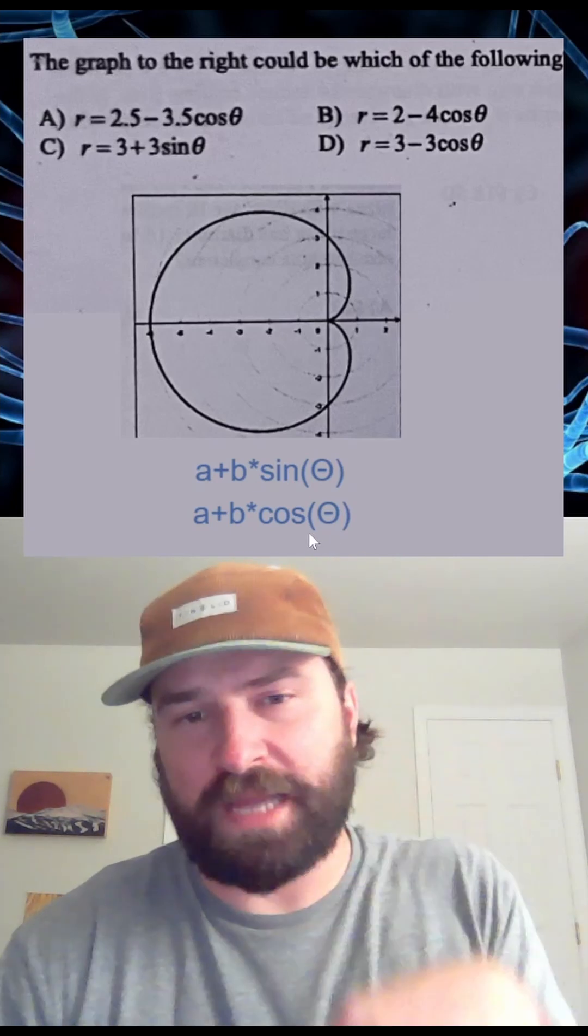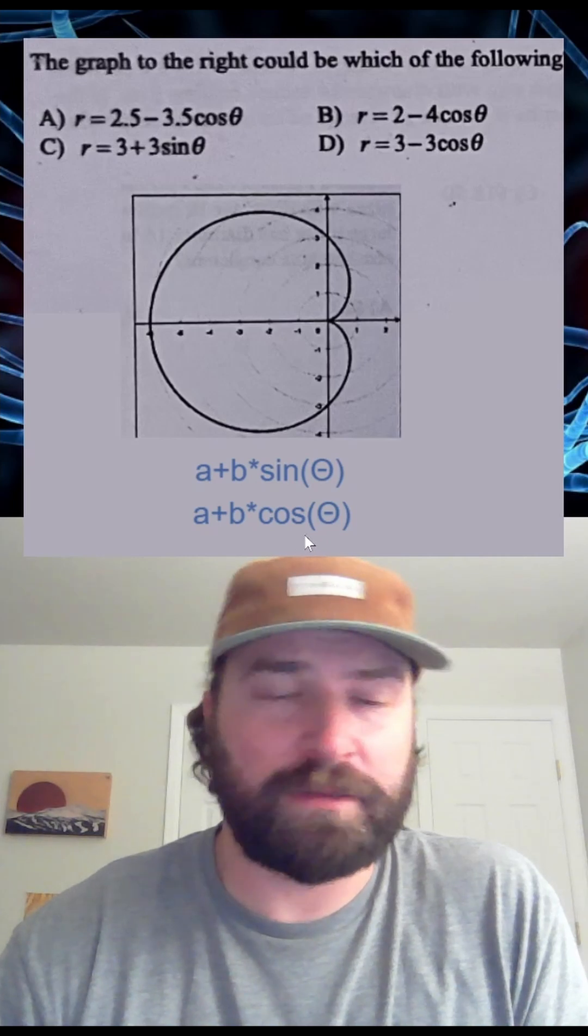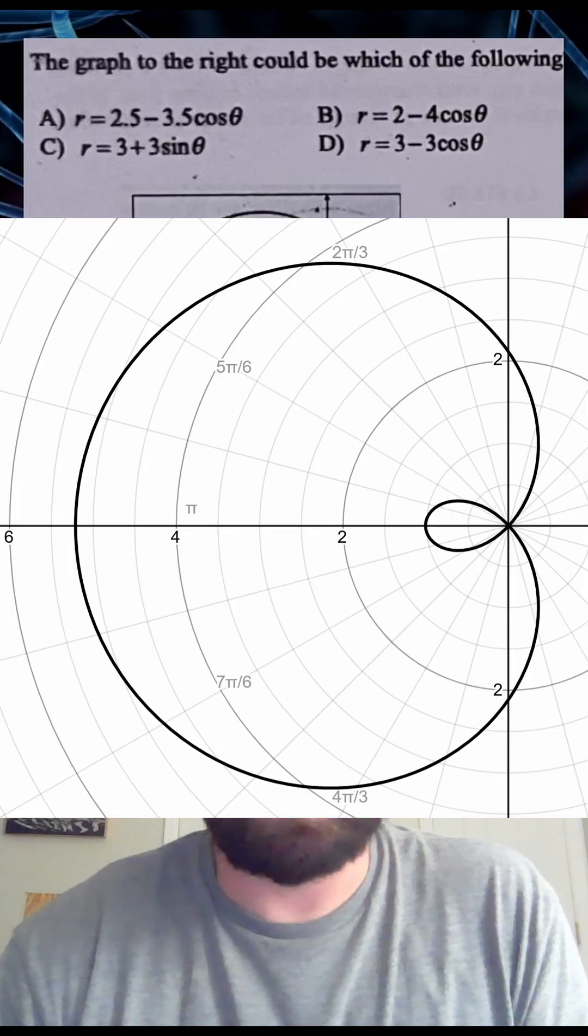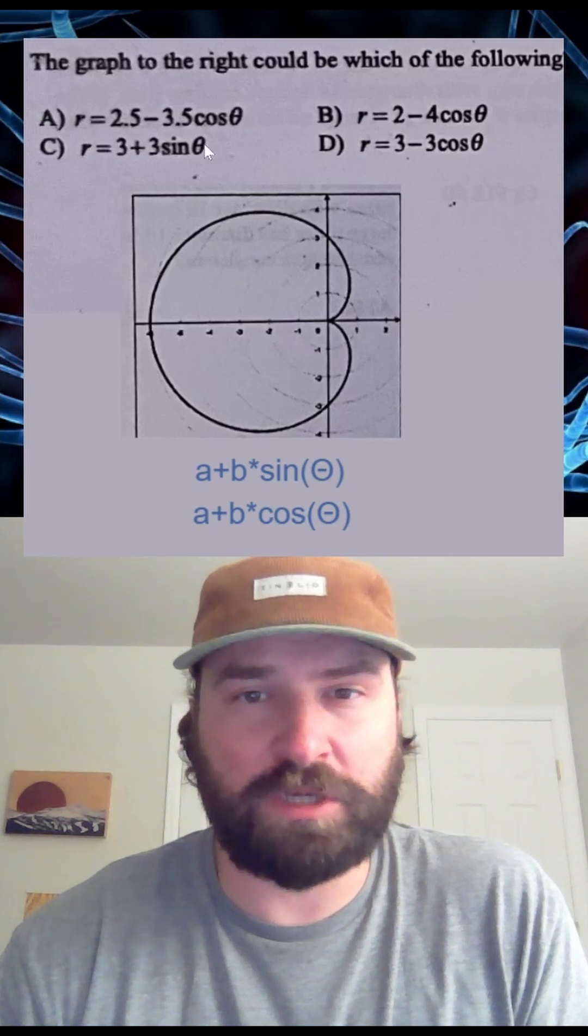Sine graphs are going to go up and down like this, or this, and cosine graphs are going to go left or right like this, or like this. So the example we're looking at here is going to the left, so it's going to be a cosine graph.